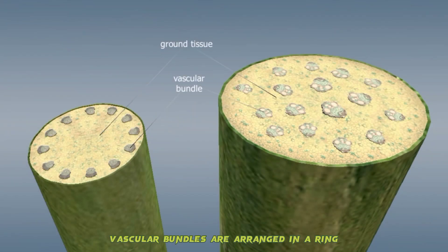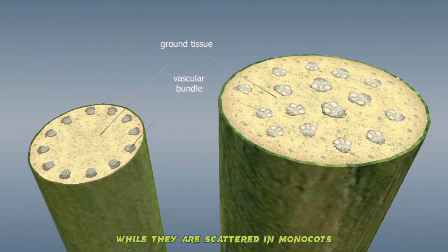Vascular bundles are arranged in a ring in the stems of herbaceous dicots, while they are scattered in monocots.